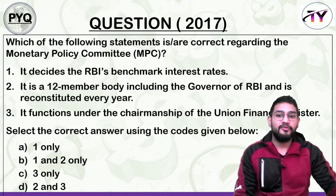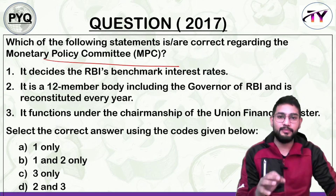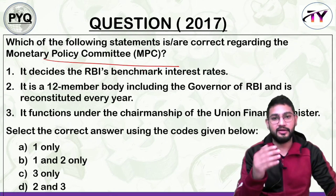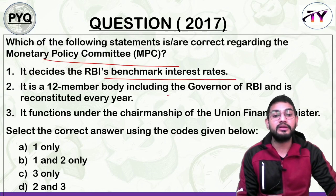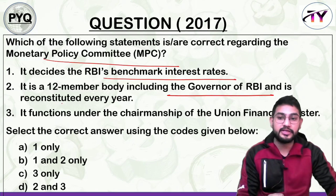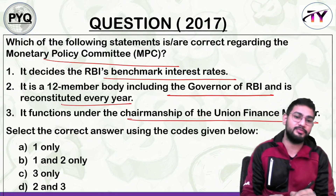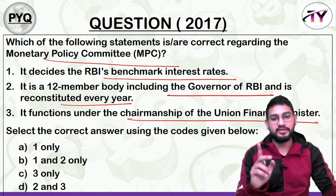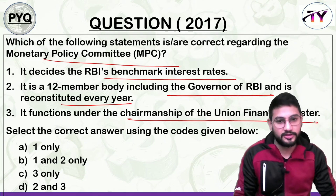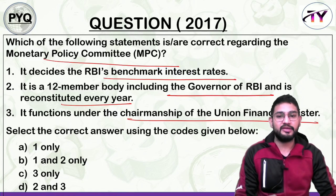In 2017, UPSC asked this question: 'Which of the following statements is correct regarding Monetary Policy Committee (MPC)?' Statement 1: It decides the RBI benchmark interest rate. Statement 2: It's a 12-member body including the Governor of RBI and is reconstituted every year. Statement 3: It functions under the chairmanship of the Union Finance Minister. Options A, B, C, D — write your answer in the comment box.